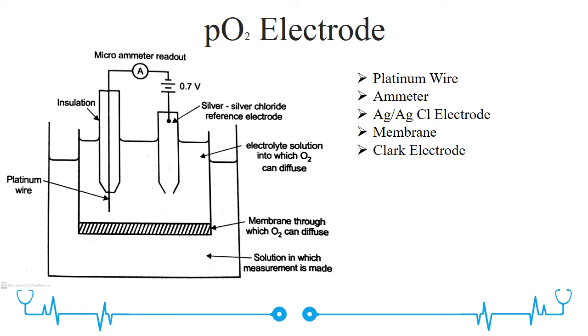A voltage of 0.7 volts is applied between the platinum wire and the reference electrode using a battery. The negative terminal is connected to the platinum wire through an ammeter. Reduction of oxygen takes place at the platinum wire. An oxidation-reduction current is developed which is proportional to the partial pressure of the diffused oxygen.